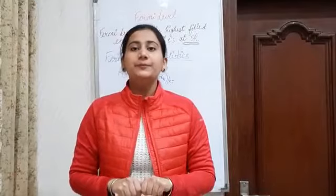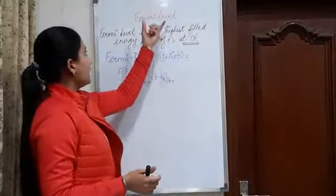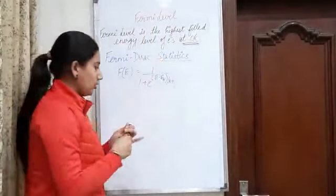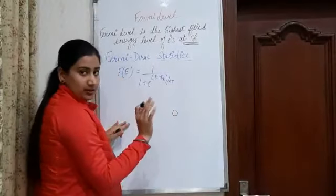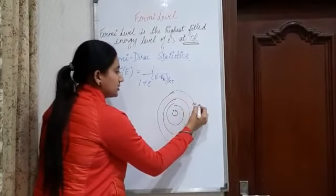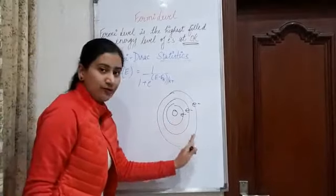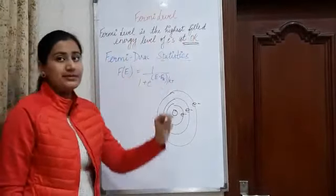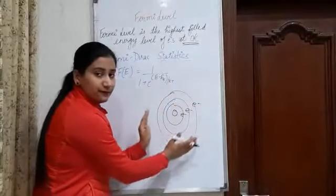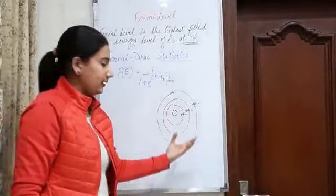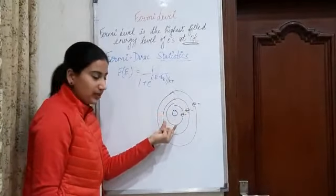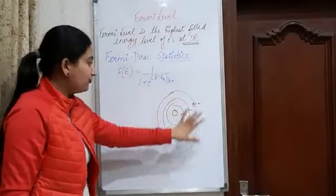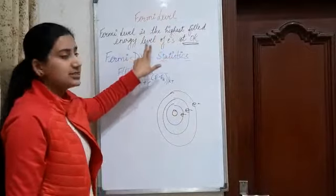In this video we are going to study Fermi level. By the name we get to know that it is an energy level. In atoms there is a nucleus and there are energy levels around the nucleus which contain electrons. Fermi level is one of these energy levels — specifically the energy level which is completely filled with electrons. Out of all filled energy levels, the highest energy level which is filled is the Fermi level.